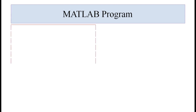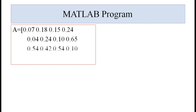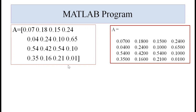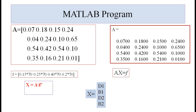Now we will see the MATLAB program. First we write matrix A, which consists of the compositions of all four components, giving a 4×4 matrix with four equations. We write matrix A in the editor window with four rows separated by semicolons or on different lines, then write matrix F. After writing A and F, we have the matrix equation Ax = F and we solve for x using the appropriate command. The unknown matrix x gives D1, B1, D2, and B2.